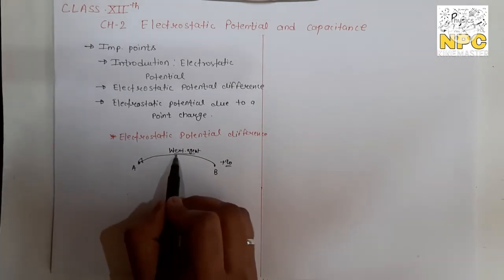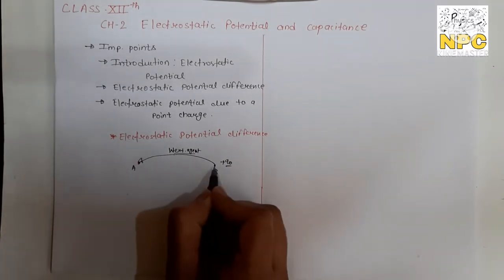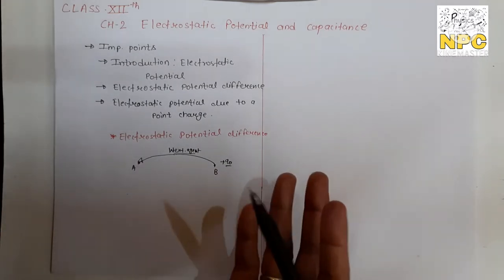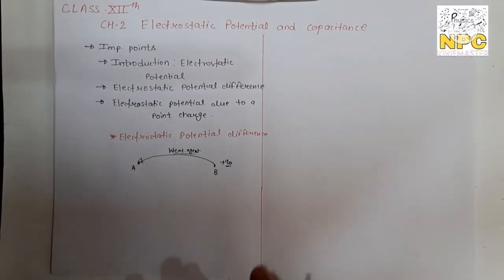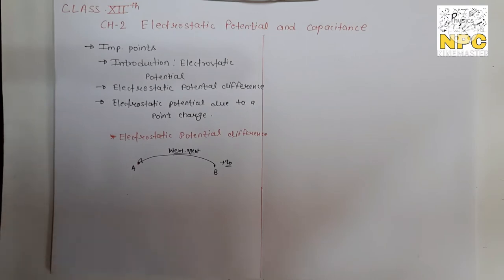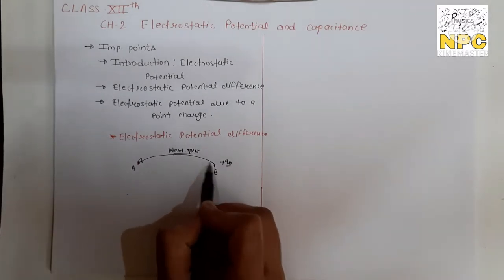This work done by the external agent is against the electrostatic force. Why? Because we need to move the point charge without change in kinetic energy — very slowly. We move it slowly so that kinetic energy does not change, and when kinetic energy doesn't change, you can get the maximum potential.